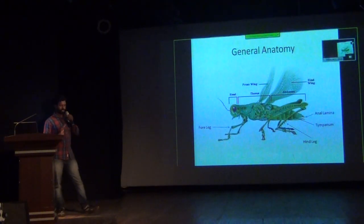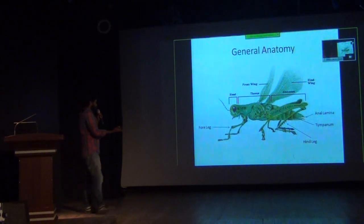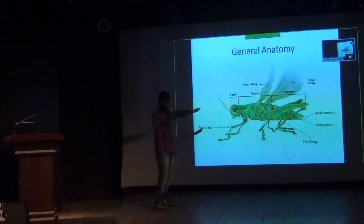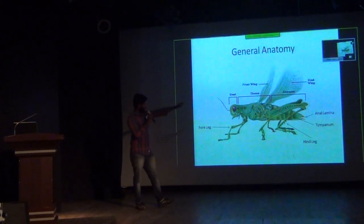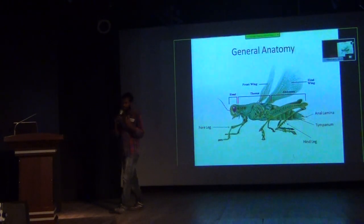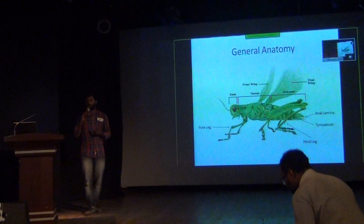This is the general anatomy — the simplest version of it. The important part to focus on is the thorax, where the pronotum and the prosternum are. The hind legs as well as the forelegs are important. The wings are also important because the venation is quite significant in the case of some families.